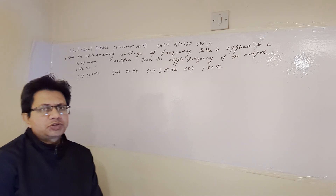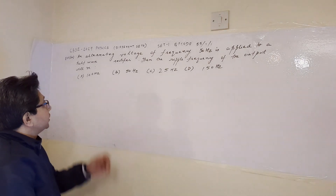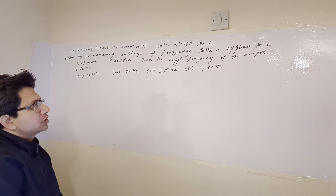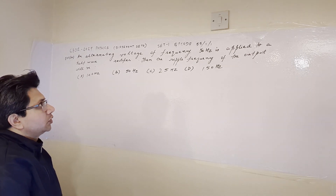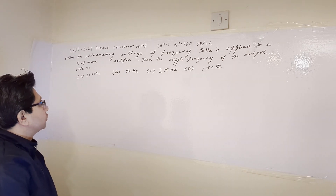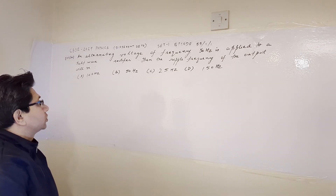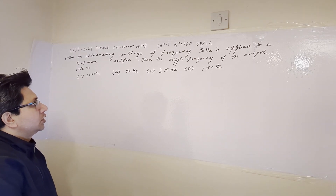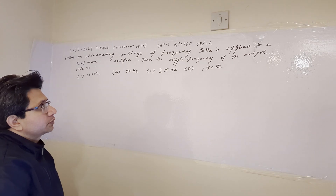The fourth question based on this case study is: an alternating voltage of frequency 50 Hz is applied to a half wave rectifier. Then the ripple frequency of the output will be — option A: 100 Hz, option B: 50 Hz, option C: 25 Hz, and option D: 150 Hz.